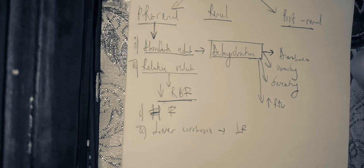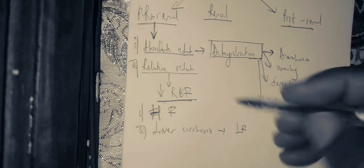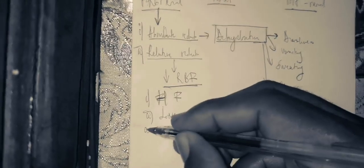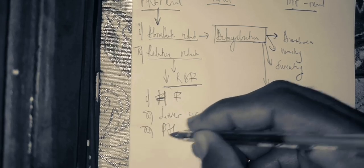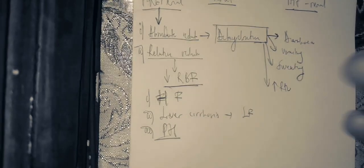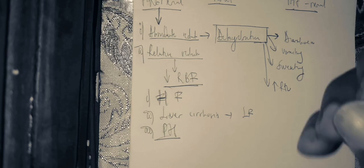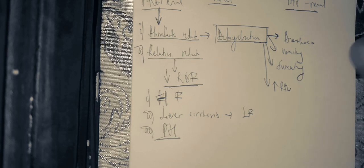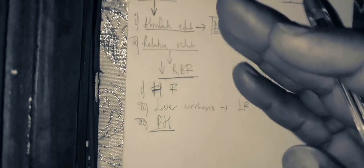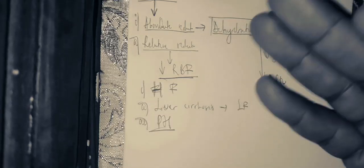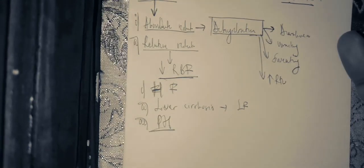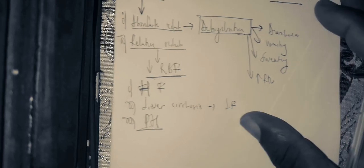The third cause of relative hypovolemia is liver cirrhosis with portal hypertension, where a pool of fluid accumulates in the ascitic fluid, resulting in a reduction of fluid in the systemic circulation.